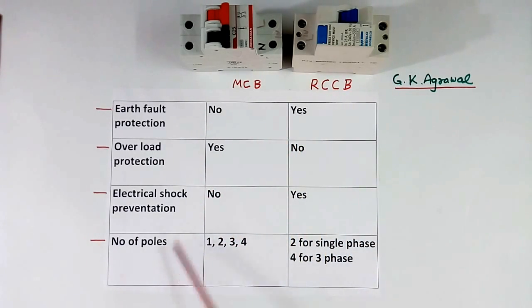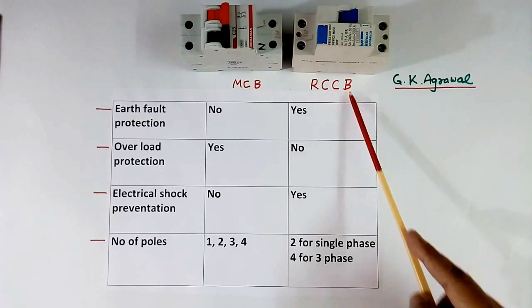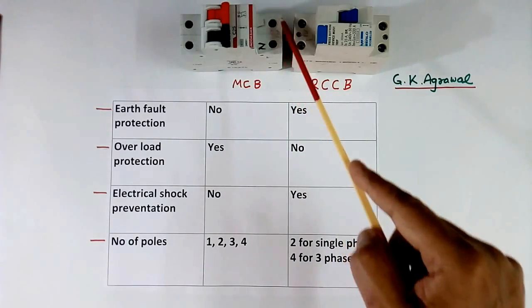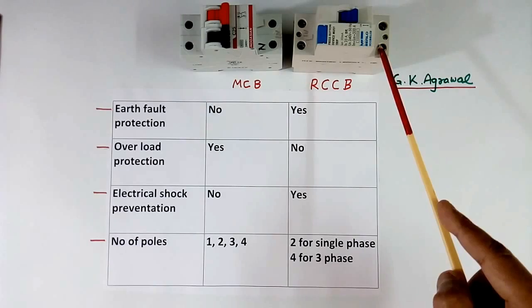Then number of poles. MCBs are available in 1, 2, 3 or 4 poles. RCCB are available in 2 poles for single phase, 4 poles for 3 phase. This is 2 poles. This is 2 poles. This also is 2 poles.